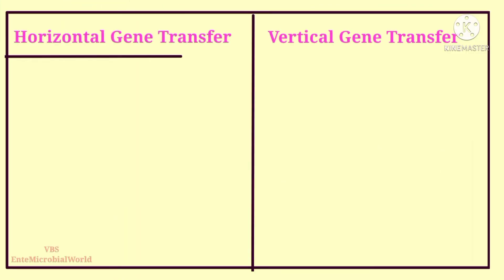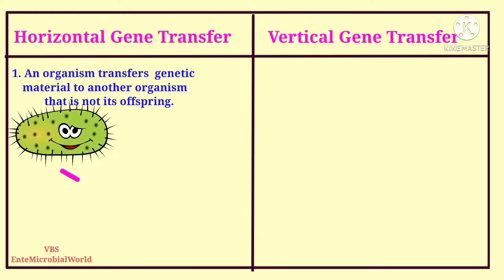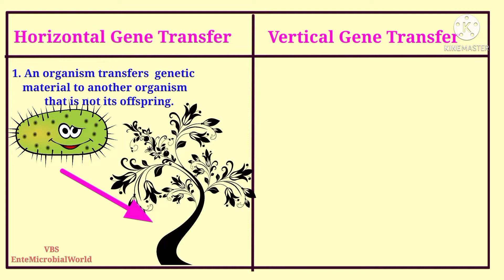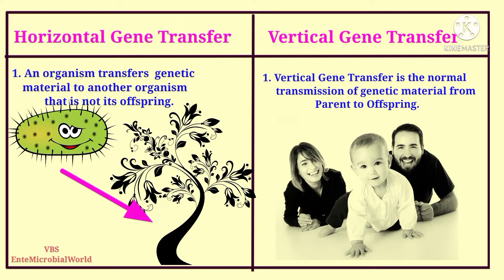Horizontal gene transfer is a process in which an organism transfers genetic material to another organism that is not its offspring. Vertical gene transfer is the normal transmission of genetic material from parent to offspring.